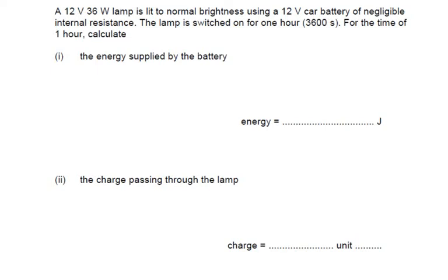A 12 volt 36 watt lamp is lit to normal brightness using a 12 volt car battery of negligible internal resistance. The lamp is switched on for one hour. For the time of one hour, calculate the energy supplied by the battery.